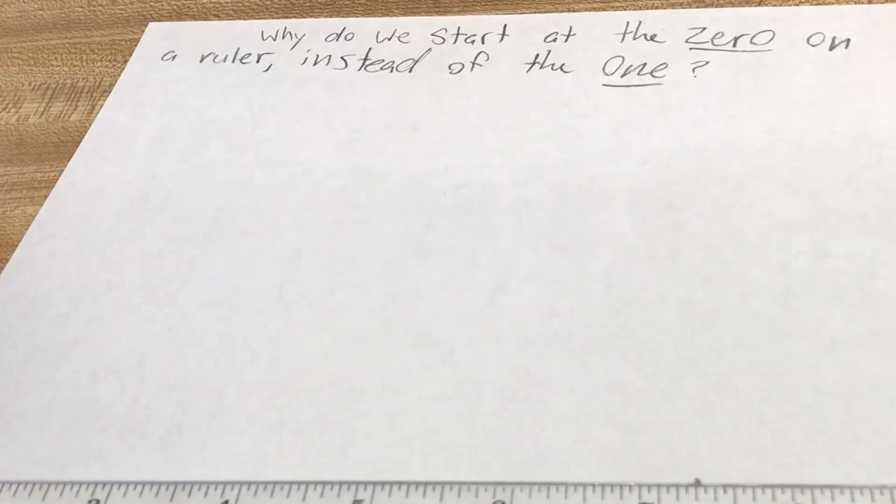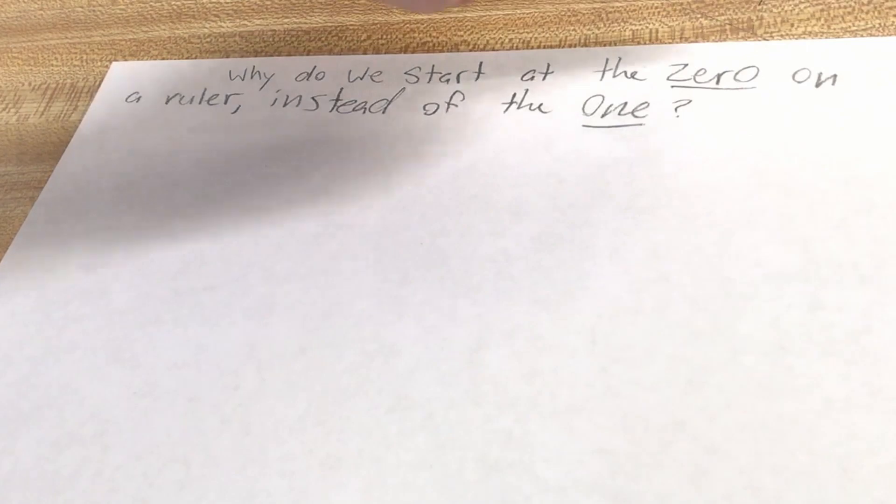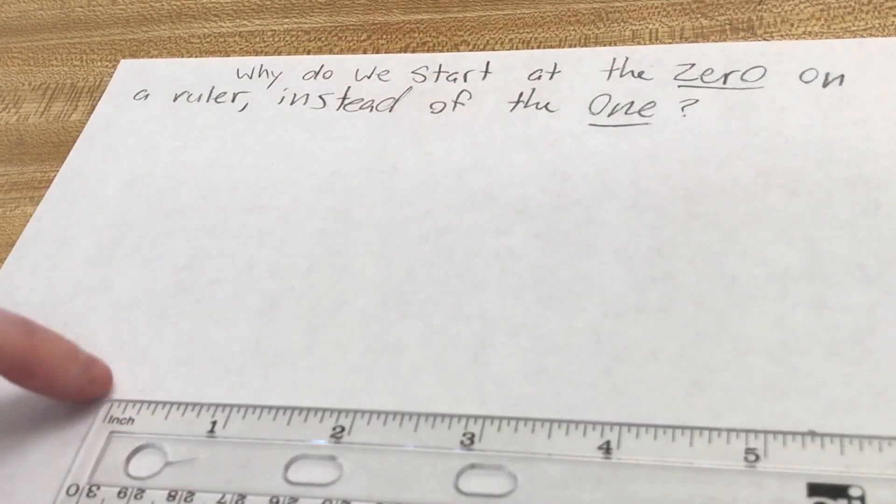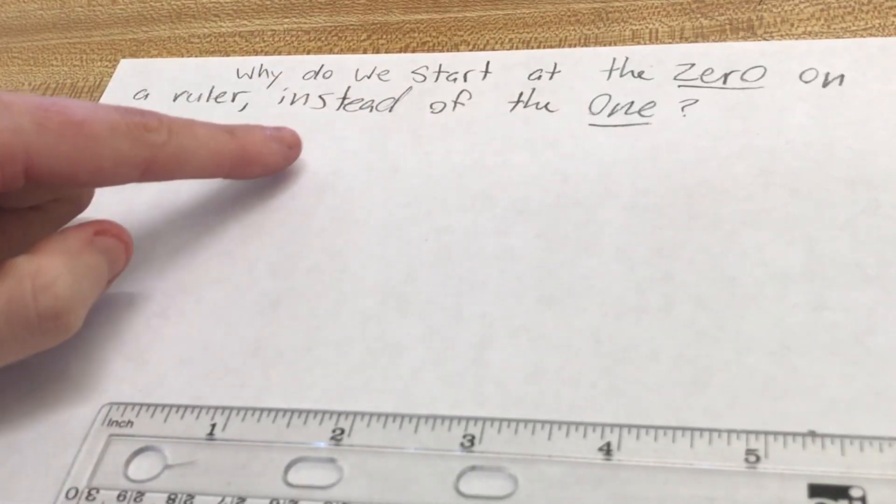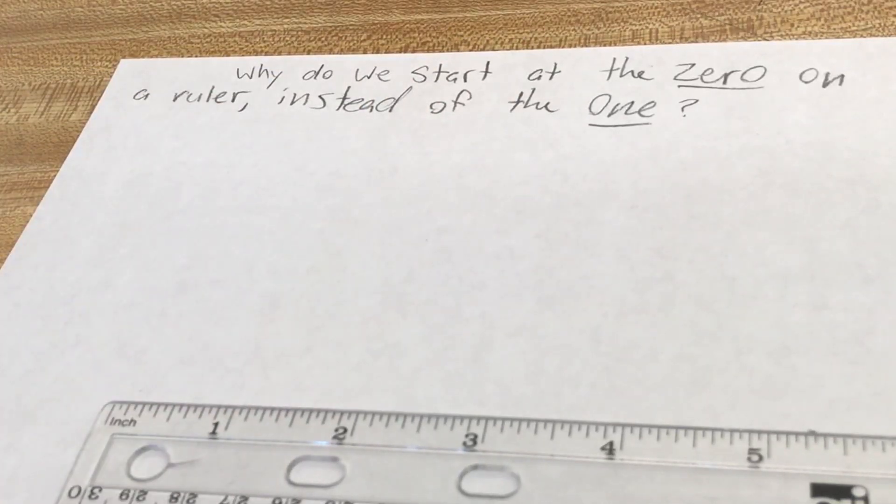We're going to answer the common mistake type of question when it comes to using a ruler. The question is, why do we start at the zero? This one doesn't have a zero, but that's a zero. Why do we start at the zero on a ruler instead of the number one?